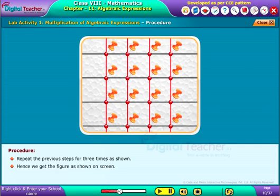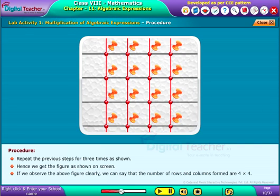Hence we get the figure as shown on screen. If we observe the above figure clearly, we can see that the number of rows and columns formed are 4 by 4.